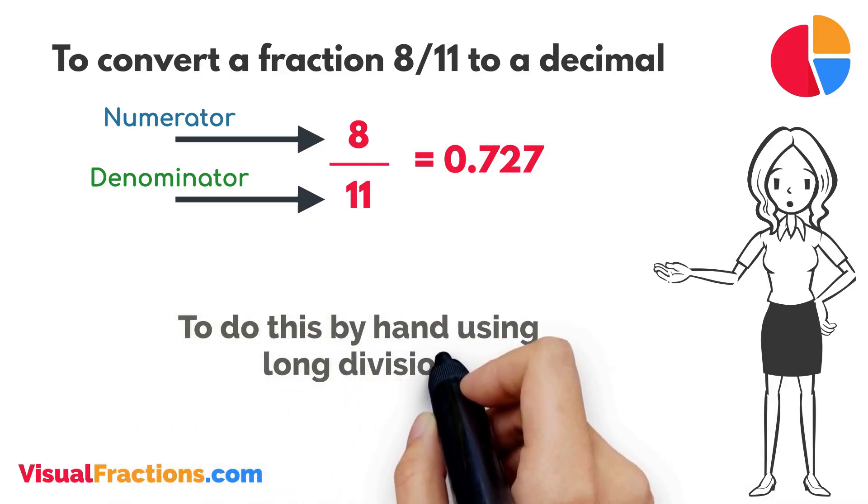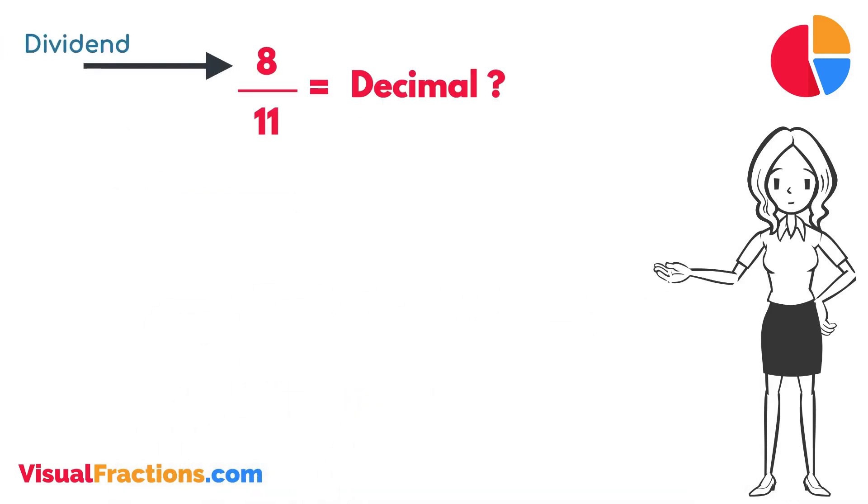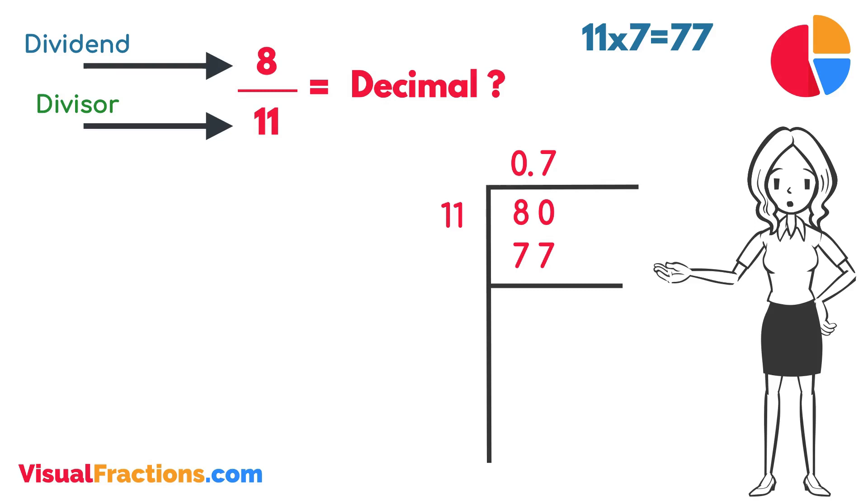To do this by hand using long division, we start by writing 8 as the dividend and 11 as the divisor. Since 11 doesn't fit into 8, we add a decimal point in our answer and append a 0 to 8, making it 80. How many times does 11 go into 80? Exactly 7 times. We write 7 after the decimal point in the quotient. Multiplying 7 by 11 gives us 77. When we subtract 77 from 80, we get a remainder of 3.